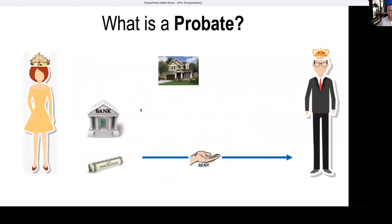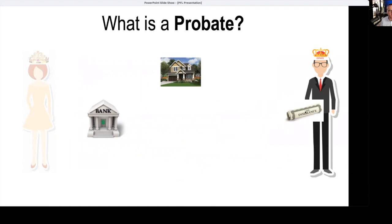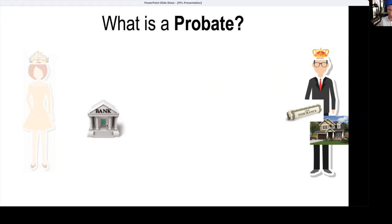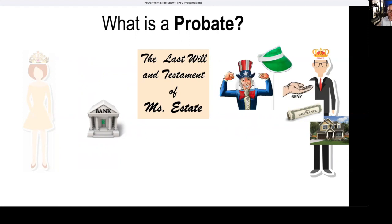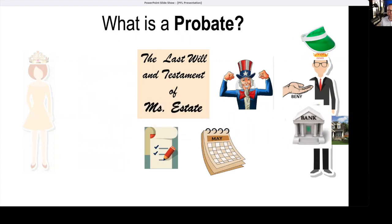So what is probate? It's a legal process to change the title of an asset out of the name of the deceased. For example, Mrs. Estate passes away. Her husband is the beneficiary of her life insurance, so he collects that without probate. They're joint owners on the house, so that also goes to him. But a bank account still in the name of Mrs. Estate, who's deceased, is part of her estate. In order to collect it, we look at her will, see who the personal representative is, see who the beneficiaries are, and then after probate a personal representative gets appointed. Several steps and lots of time later, they can collect that account through probate.